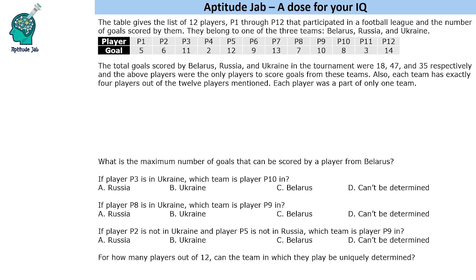In this set, we are given a table listing 12 players, P1 through P12, that participated in a football league and the number of goals scored by them. They belong to one of the three teams: Belarus, Russia, and Ukraine. The total goals scored by these three countries were 18, 47, and 35 respectively, and these players were the only players to score goals. Each team has exactly four players out of the 12 players mentioned.